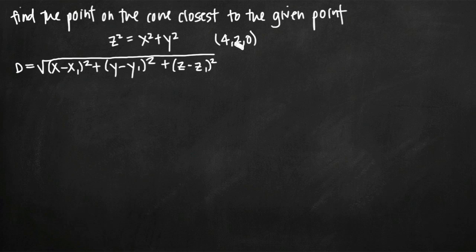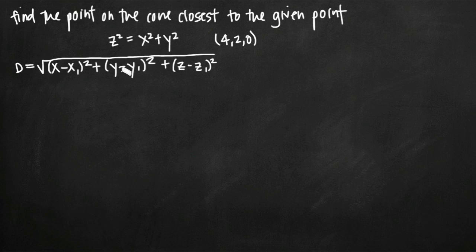We have one coordinate point, (4, 2, 0). We can plug that in for x₁, y₁, and z₁. But because we're going to try to minimize this distance formula, we also need to eliminate a third variable — we can't optimize this equation with three variables involved. So we're going to try to eliminate z, leaving only x and y, giving us a function in two variables that we can more easily optimize.